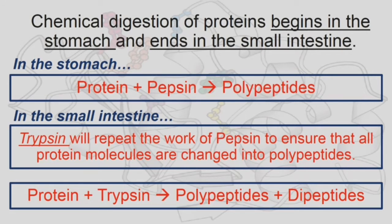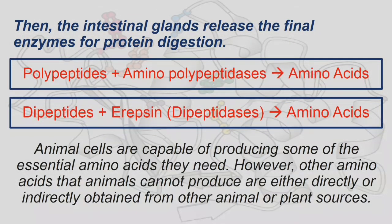In the small intestine, protein produces polypeptides and dipeptides with the aid of trypsin, which repeats the work of pepsin to ensure all protein molecules are changed into polypeptides. Then the intestinal glands release the final enzymes for protein digestion: polypeptides are converted into amino acids by aminopeptidase, and dipeptides are converted into amino acids by erepsin, also known as dipeptidases.